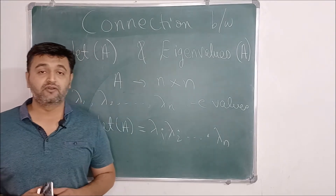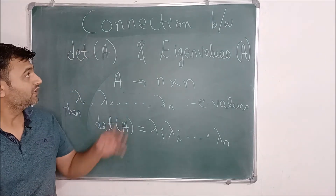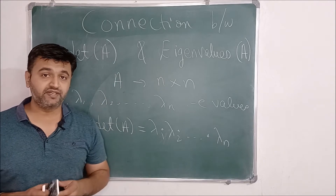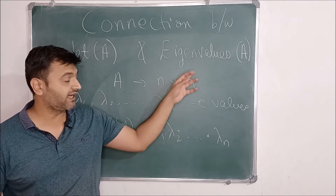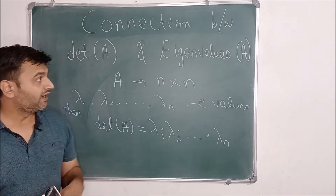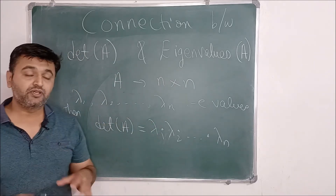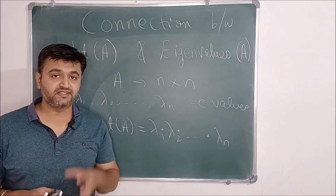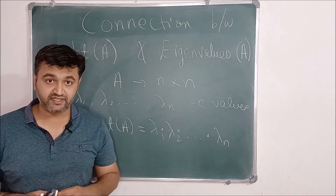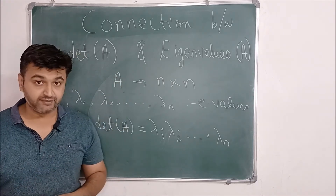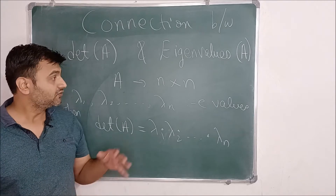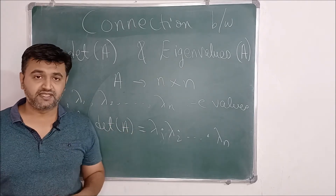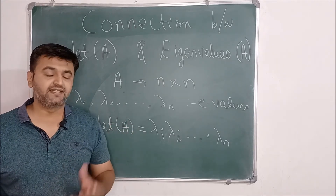Hey everyone. So today we are going to talk about the connection between the determinant of a square matrix and the eigenvalues of A. This is a very important connection between these two nice properties for a given matrix, and that's why one should study them. So before going to the proof, let us try to understand the statement and an example.